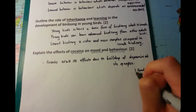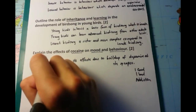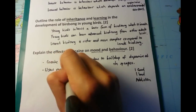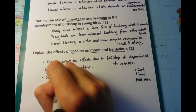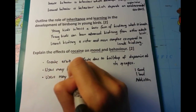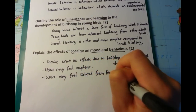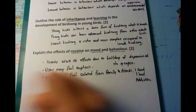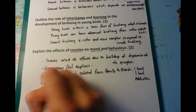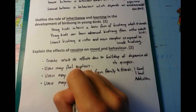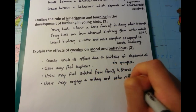Remember to focus the majority of your answer on mood and behaviour as the question requires. One good effect on mood is that users may feel euphoric or extremely happy. One bad side effect is that users may feel isolated or alienated from family and friends. One change in behaviour is that users may engage in robbery and other risky behaviour due to addiction in order to maintain their cocaine habit — it is an expensive drug.